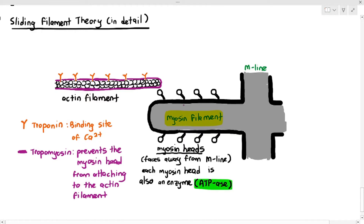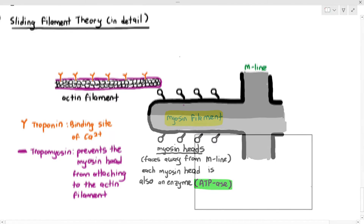Those purple-colored structures covering the actin filaments are known as tropomyosin, which prevents the myosin head from attaching to the actin filament. We also have the myosin heads located on the thick myosin filament, facing away from the M line. The myosin head is also an enzyme called ATPase, meaning it can hydrolyze or break down ATP. Now let's get into the details.